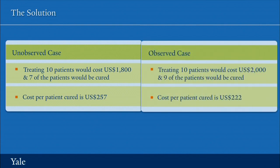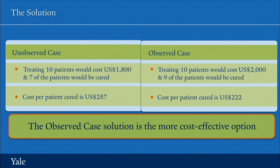For directly observed therapy, it's $200 per patient to treat — more expensive — but 90% of patients are cured. Treating 10 patients costs $2,000, and nine of the ten are cured. Dividing $2,000 by nine gives $222 per patient cured. So even though observed therapy is more expensive, it turns out to be more cost-effective: the cost per patient cured is less than with unobserved therapy.